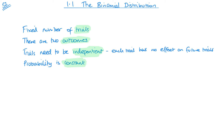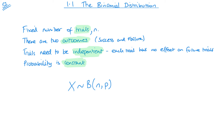Before we get stuck into examples, let's write down what we're going to be looking at. If we think of a random variable, binomial is going to be written as X ~ B(N, P) — N for number of trials and P for probability. Remember from your normal distribution, we had X distributed as N for normal. Now we've got B for binomial. Adding that in: fixed number of trials, two outcomes — success and failure — and the probability is P.